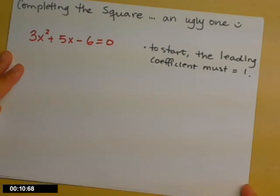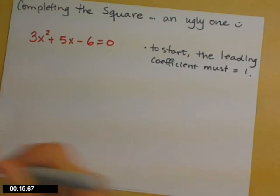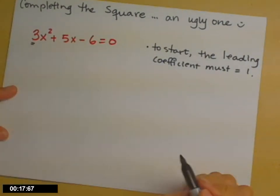So the first thing you need to know is that before we complete the square, we need to have a leading coefficient of 1. Currently, as you'll see, our leading coefficient is 3.